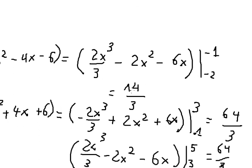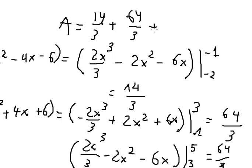We sum the three results together: 14 over 3, plus 44 over 3, plus 64 over 3 gives us 142 over 3. That is the final answer. This is the end — thank you for watching.